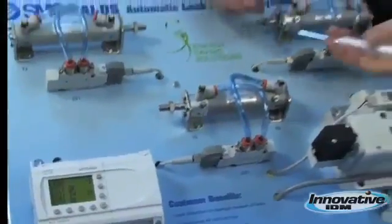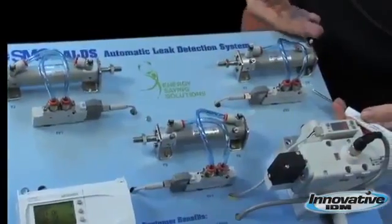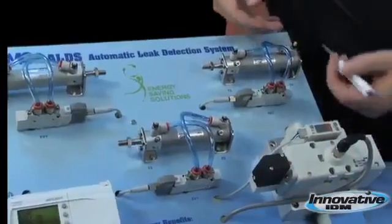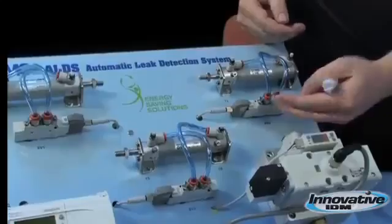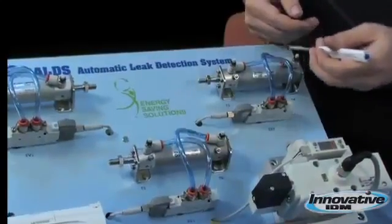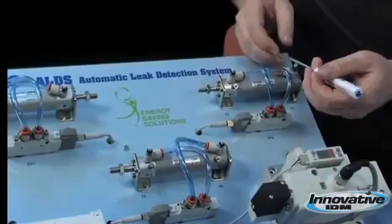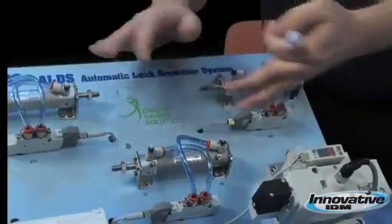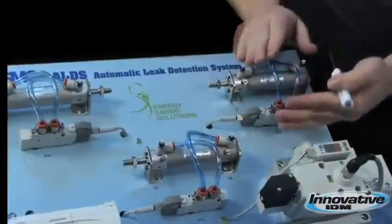On this panel here, we can locate T4. And now we know that the leak is located within this section of the piece of equipment only.